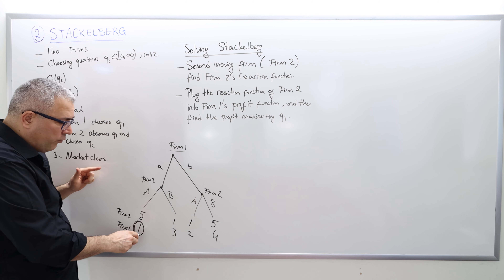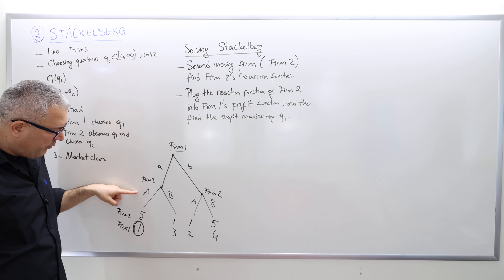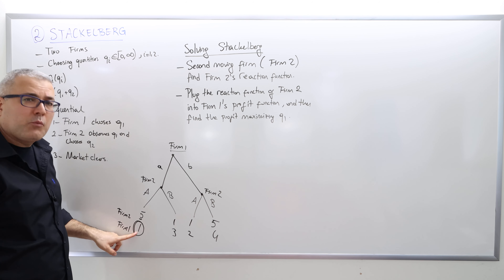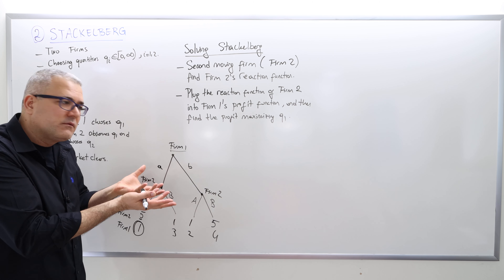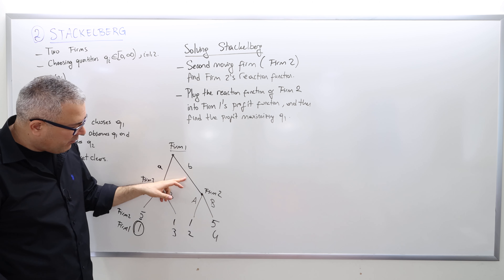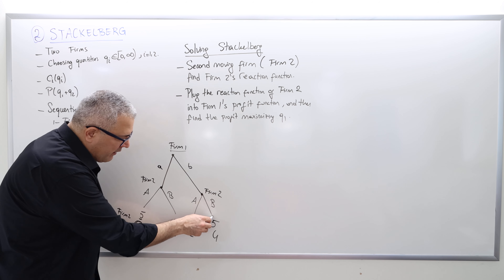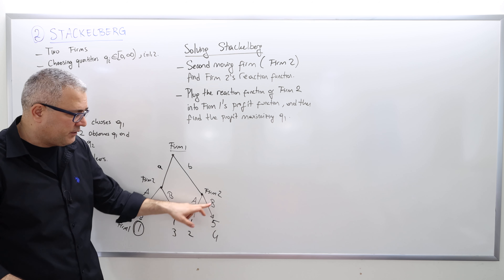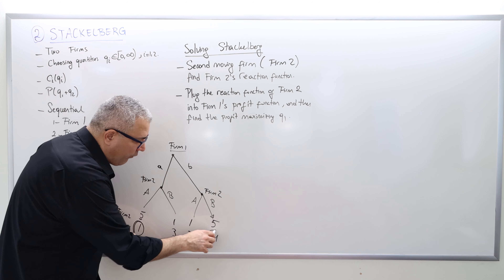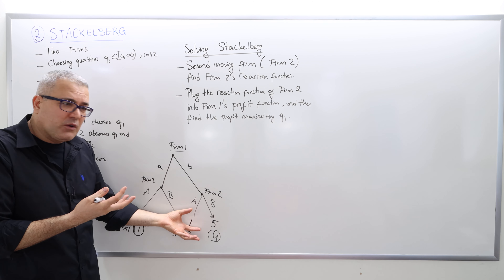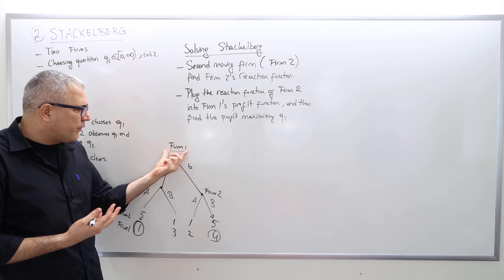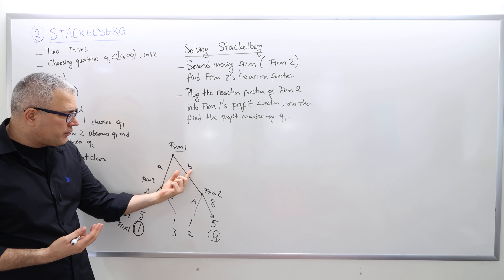This is a strong assumption, but necessary to solve the Cournot/Stackelberg game. If firm one chooses a, it knows firm two will go for A — so firm one ends up with payoff one, not three. But if firm one chooses B, the opponent will go for B because five is higher. So firm one ends up with four. Therefore, when choosing between A and B, firm one will certainly go for B — getting payoff four versus payoff one.